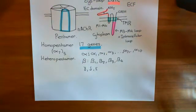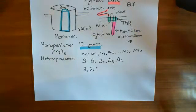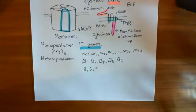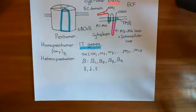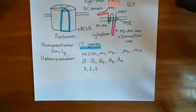Welcome to this next video in which we're discussing slow channel myasthenic syndrome. In the process of discussing what is the subunit composition of the nicotinic acetylcholine receptors which you have on skeletal muscle cells, which are going to respond to the acetylcholine released by the alpha motor neurons at the neuromuscular junctions.